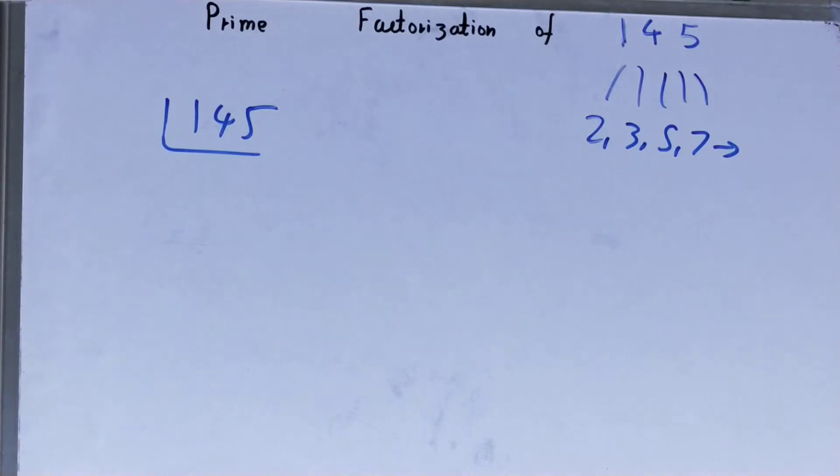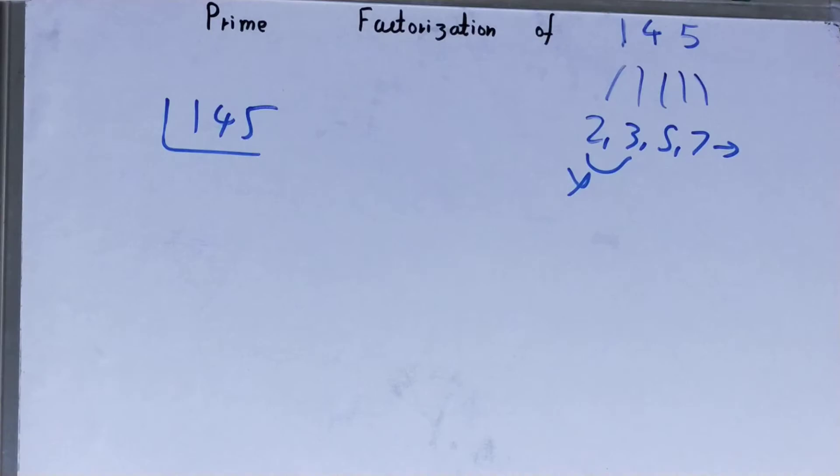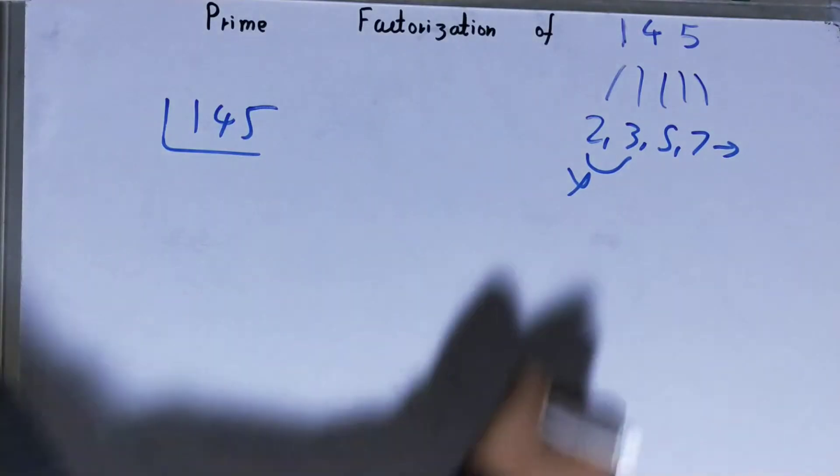It is not, right. So we will go to the next lowest prime number, that is 3. Is 145 divided by 3? If you try to divide, we will get that it is not divisible. So we'll go on to the next lowest prime number.